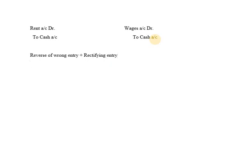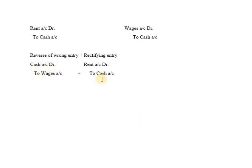The wrong entry is Wages Account Debit to Cash Account. Reverse entry: Cash Account Debit to Wages Account. Plus the correct entry: Rent Account Debit to Cash Account. Here, Cash on the debit and credit sides cancel each other out, so the rectifying entry becomes Rent Account Debit to Wages Account.